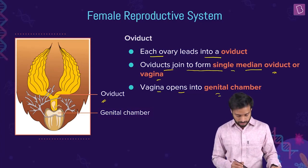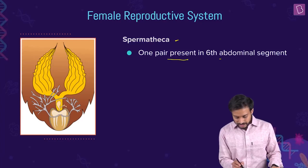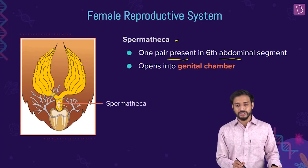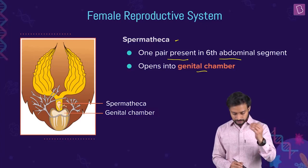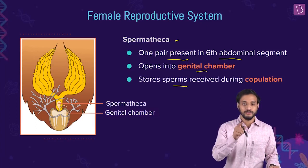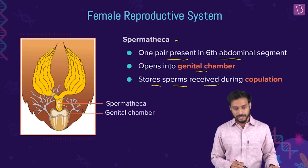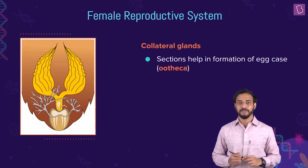The spermatheca: one pair is present in the sixth abdominal segment. It opens into the genital chamber. Its function is to store sperms received during copulation.